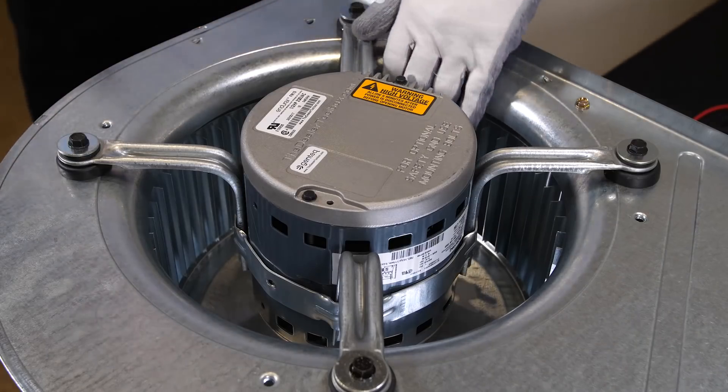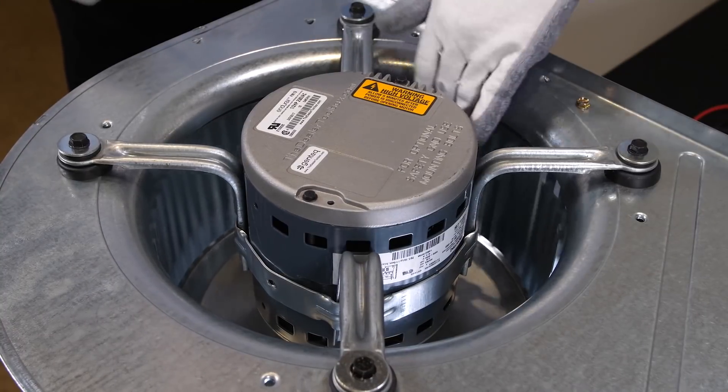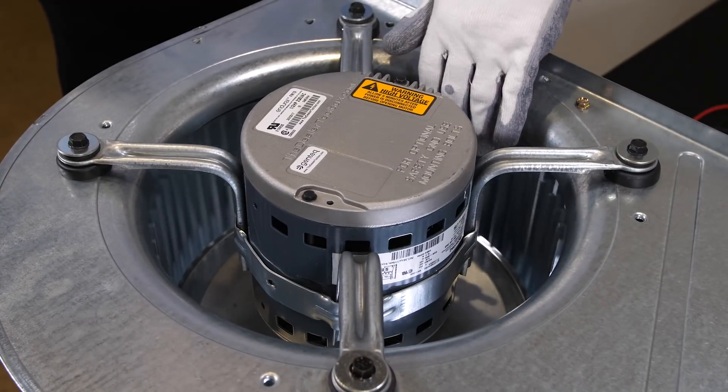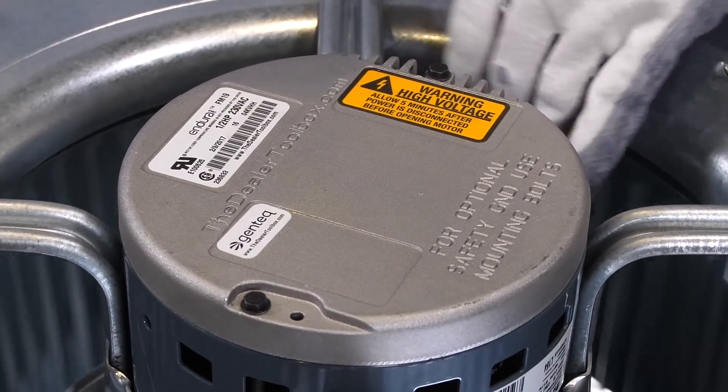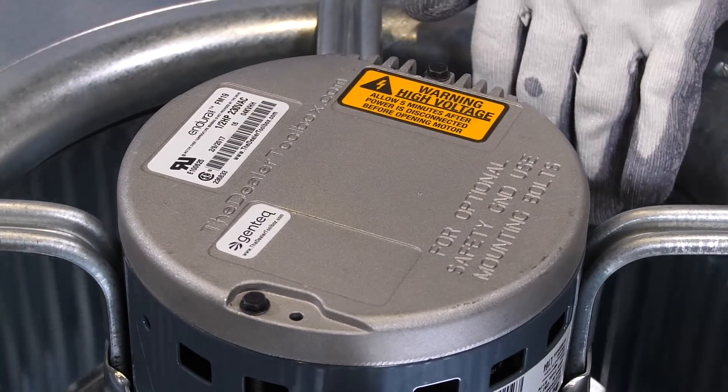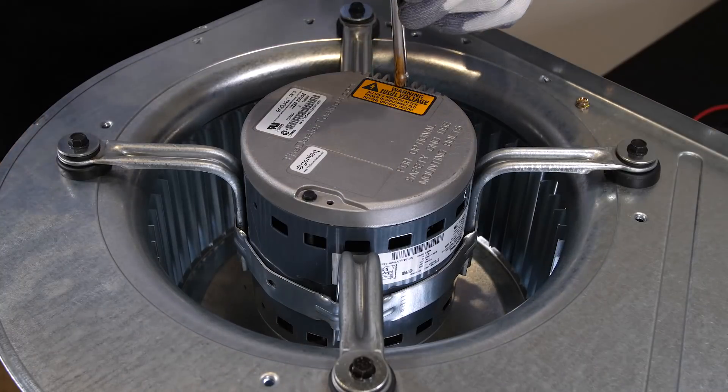Check to see that the blower wheel spins freely. If this test fails, you do have a defective motor and it needs to be replaced. If the blower wheel does spin freely, it means the motor may be fine and you need to further investigate the module by removing it.